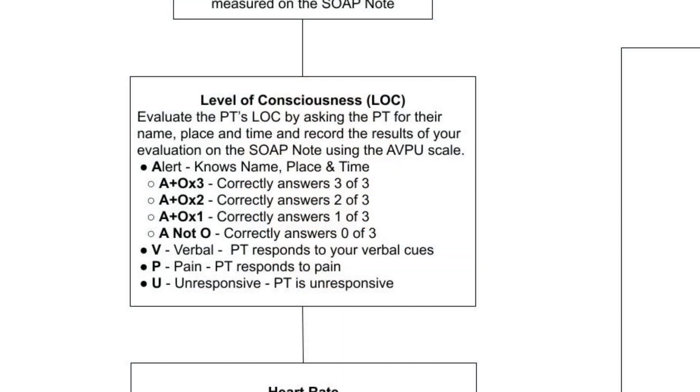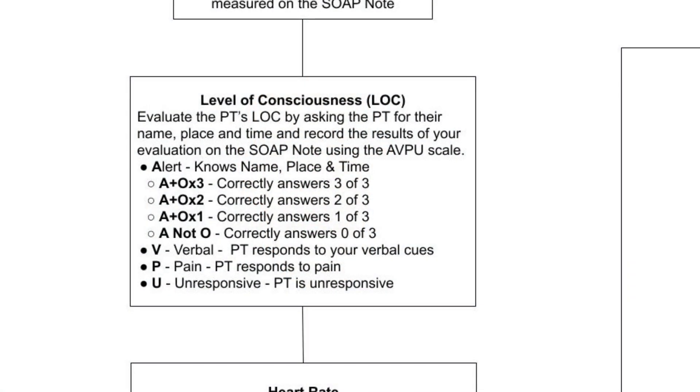Orientation Assessment: In conjunction with the AVPU scale, the orientation assessment adds another layer to understanding the patient's cognitive status. Being alert is one thing, but being fully oriented is a more specific condition. Orientation is typically assessed by asking the patient three questions: Name — can the patient state their name? Location — does the patient know where they are? And Time — can the patient provide the current date, day of the week, or time of day? A patient who can accurately answer all three questions is considered fully oriented.